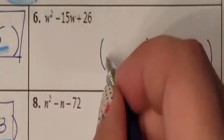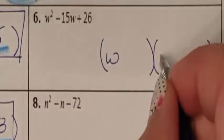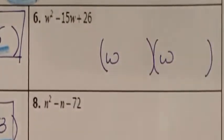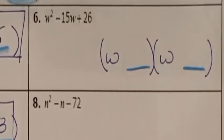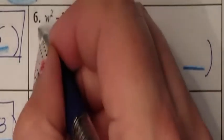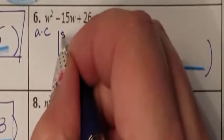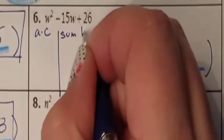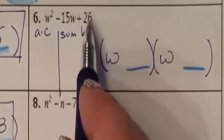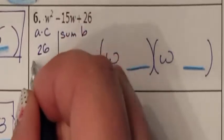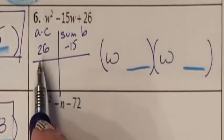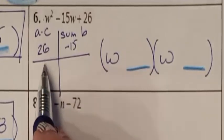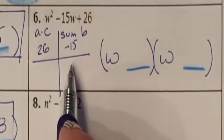The only way to get W squared is W times W. So I just need to find out what these two numbers are. The only way to do that is to do your A times C — somebody better add up to B list. A times C is 26, and my B is negative 15. What two numbers multiply to give me 26, but when I add them, I get negative 15?